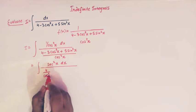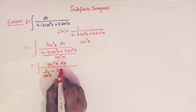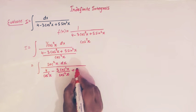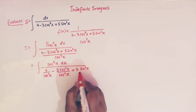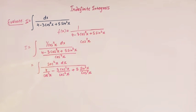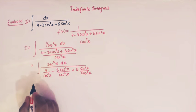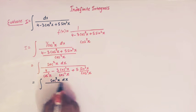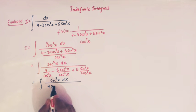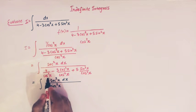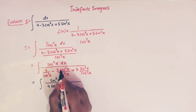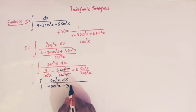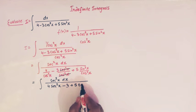So we have 4 over cos squared x, then minus 3 cos squared x over cos squared x, and then 5 sin squared x divided by cos squared x. Simplifying: we get 4 sec squared x in the first term, the cos squared x terms cancel leaving minus 3, and 5 sin squared x over cos squared x gives 5 tan squared x.